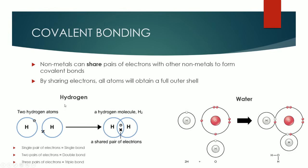But donating and accepting electrons is not the only way atoms can bond. There's something called covalent bonding, whereby there's no donation, but simply atoms share a pair of electrons — or two pairs, or three pairs. This only happens between two or several non-metallic atoms. The idea is that non-metals can share electrons with other non-metals to form covalent bonds.